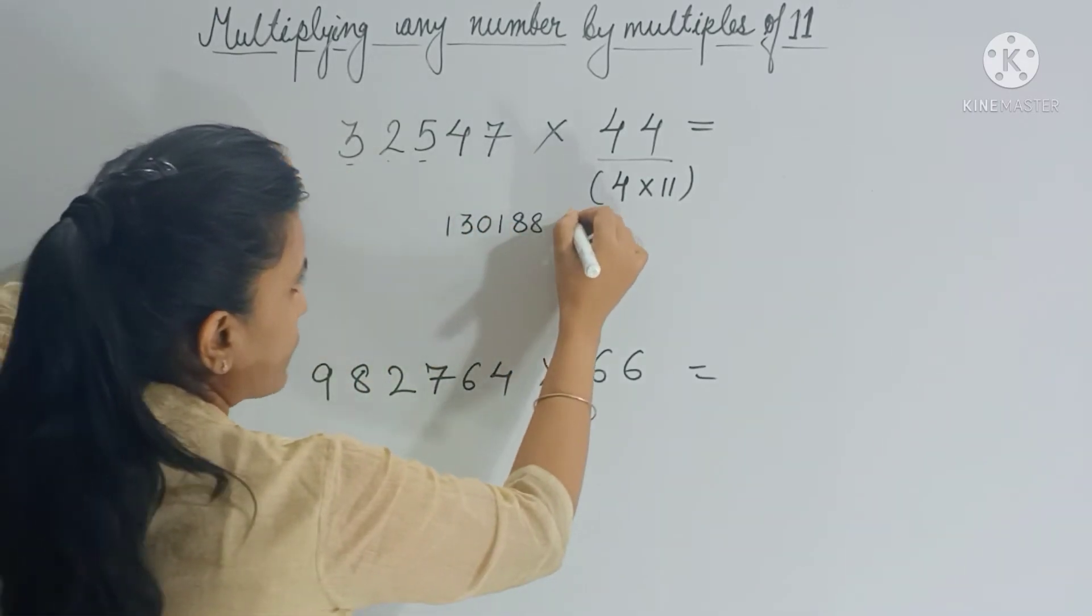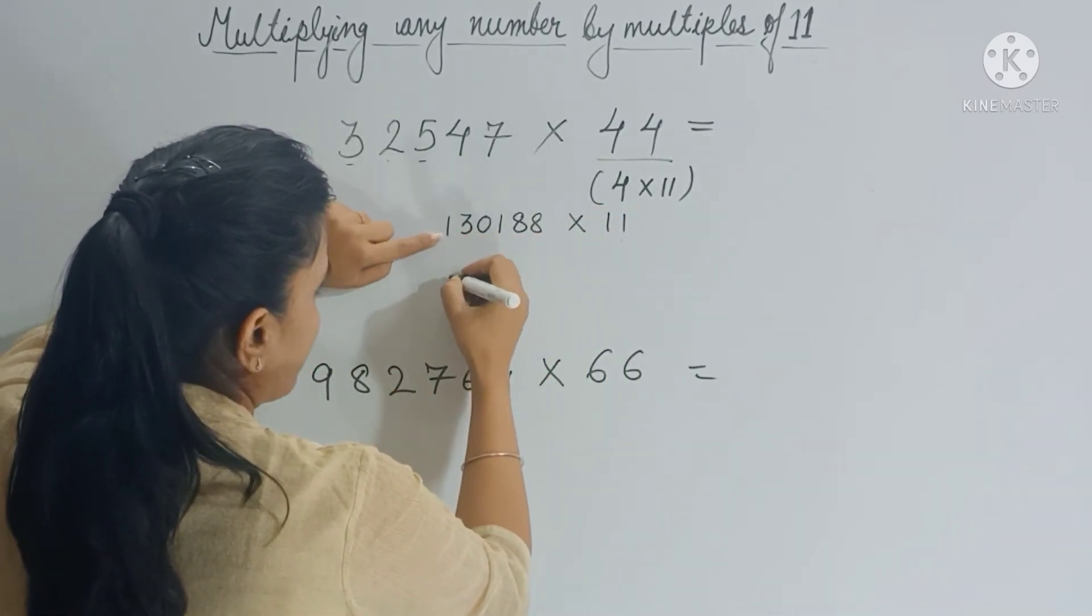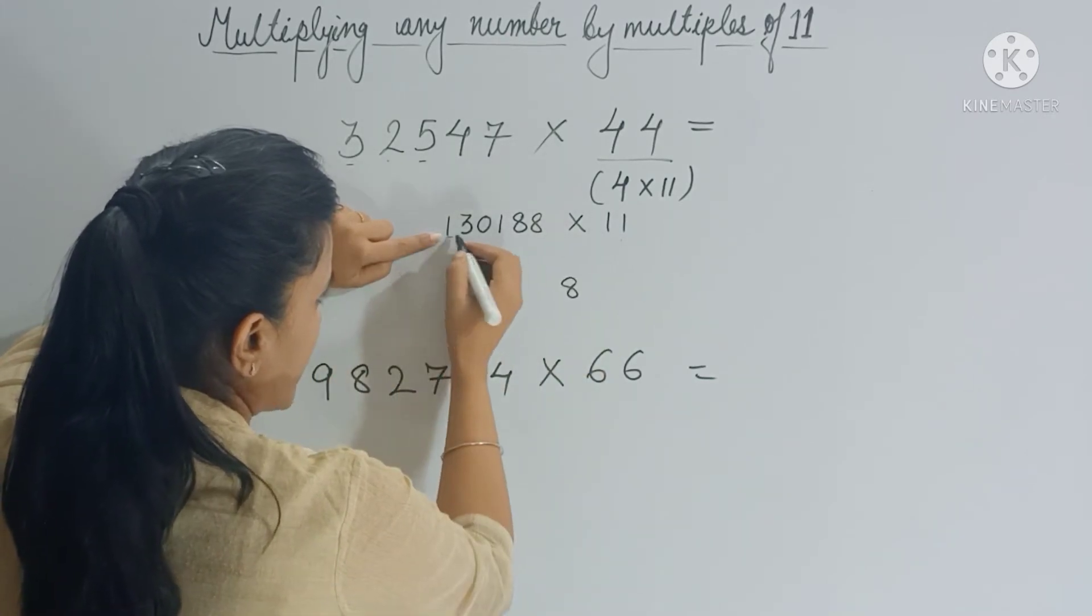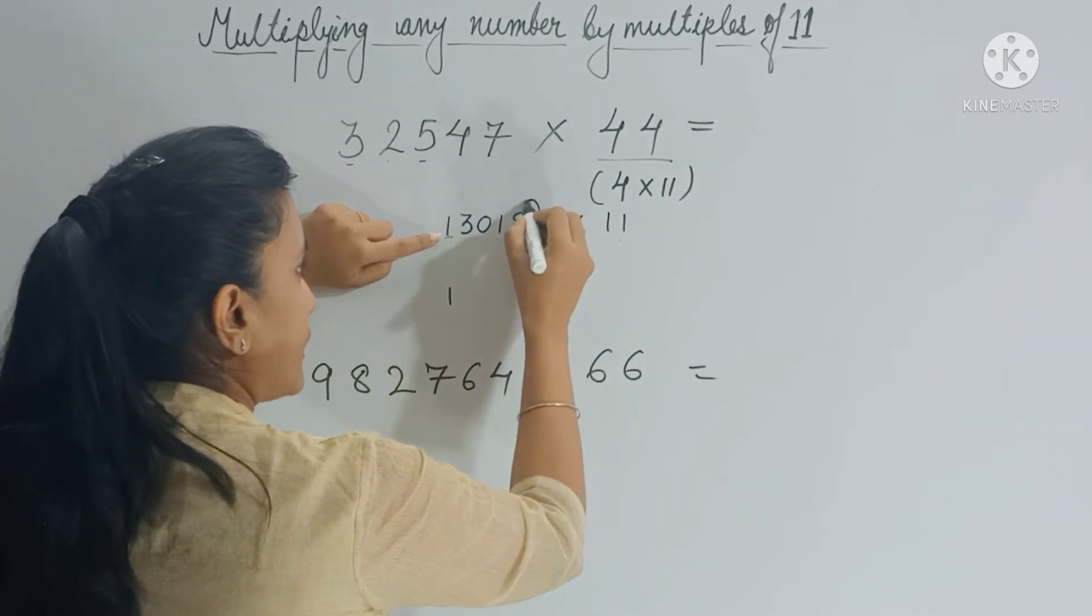Now this number you have to multiply with 11. So again use the trick. The trick is copy the first and the last digit as it is. You have to copy in the answer as it is.